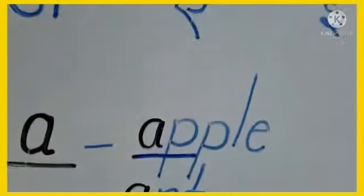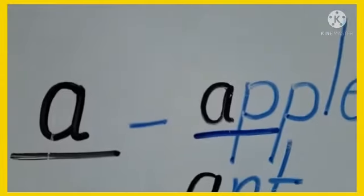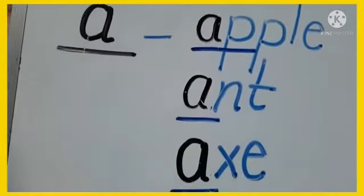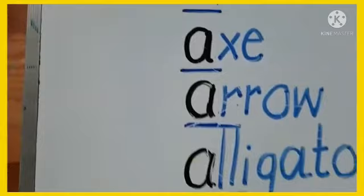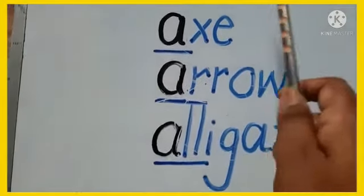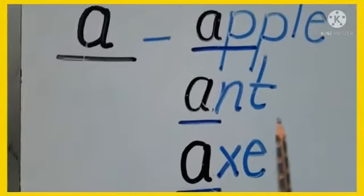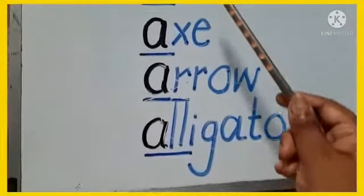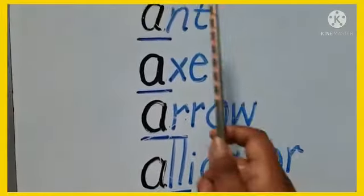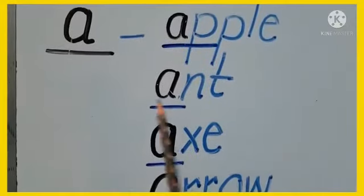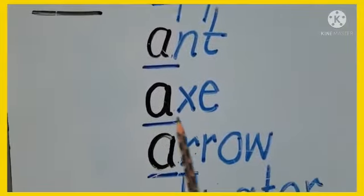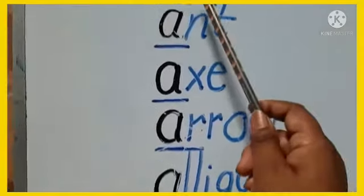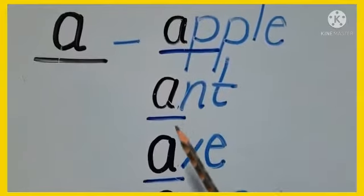Today we are going to see the sound of A. As you know, A stands for Apple, Ant, Axe, Arrow, and Alligator. Once more: Apple, Ant, Axe, Arrow, Alligator. When we say all the words, which sound do we get? Apple — A, Ant — A, Axe — A, Arrow — A, Alligator — A. So A makes sound A.